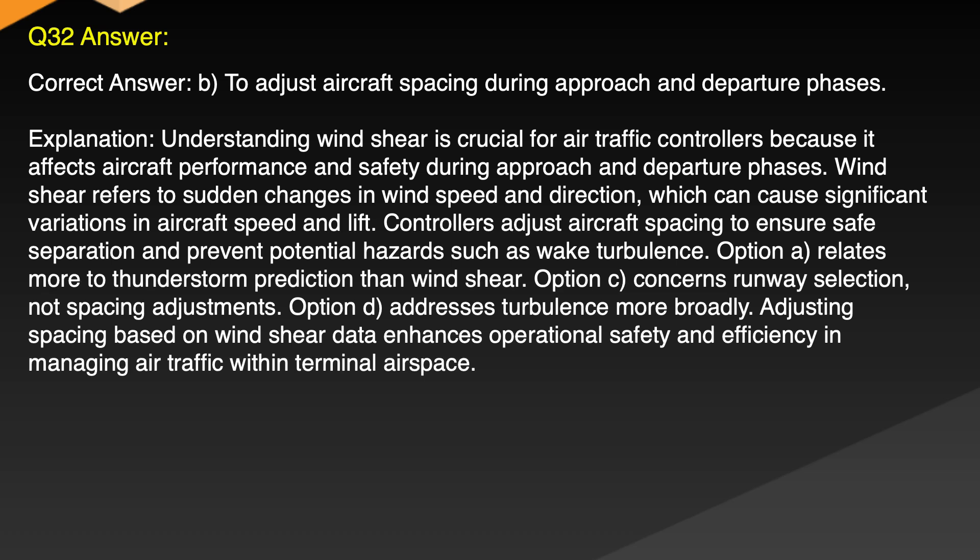Explanation: Understanding wind shear is crucial for air traffic controllers because it affects aircraft performance and safety during approach and departure phases. Wind shear refers to sudden changes in wind speed and direction, which can cause significant variations in aircraft speed and lift. Controllers adjust aircraft spacing to ensure safe separation and prevent potential hazards such as wake turbulence. Option A relates more to thunderstorm prediction than wind shear. Option C concerns runway selection not spacing adjustments. Option D addresses turbulence more broadly. Adjusting spacing based on wind shear data enhances operational safety and efficiency in managing air traffic within terminal airspace.